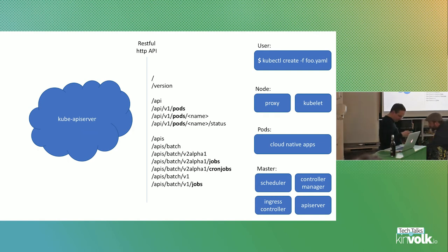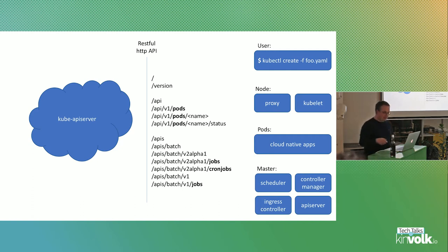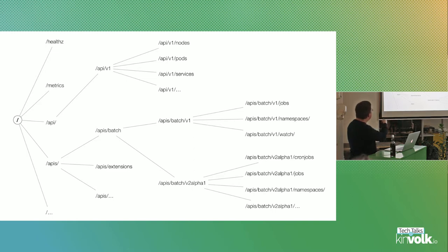If you use kubectl, which is the normal way to operate a cluster, it's also just speaking to those endpoints. On the left there's the API server process. One can take a look at all the paths and endpoints which exist: global ones for metrics and health, and then the core group where everybody knows pods, services, and nodes are — the normal objects you use.